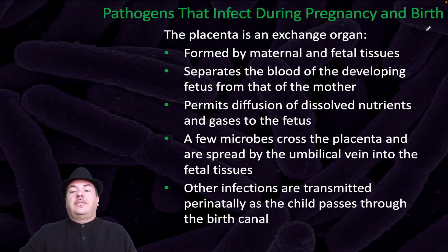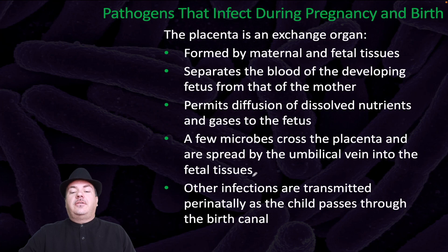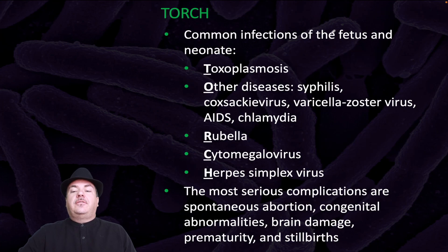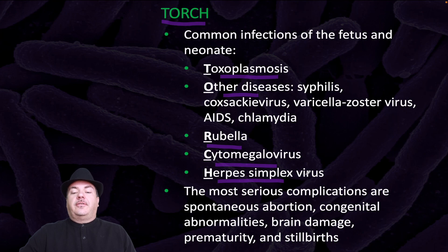There are pathogens that affect pregnancy and birth. The placenta is an exchange organ formed by maternal and fetal tissues that separates the blood of the developing fetus from that of the mother and permits diffusion of dissolved nutrients and gases. A few microbes can cross the placenta and spread via the umbilical vein into fetal tissues. Other infections are transmitted perinatally as the child passes through the birth canal. Common infections of the fetus and neonate are abbreviated TORCH: toxoplasmosis; other diseases like syphilis, coxsackievirus, varicella zoster virus, AIDS, and chlamydia; rubella; cytomegalovirus; and herpes simplex virus. The most serious complications include spontaneous abortion, congenital abnormalities, brain damage, prematurity, and stillbirths.